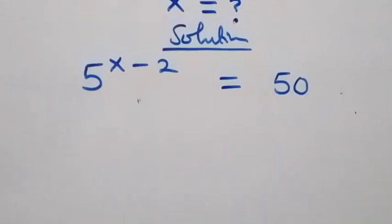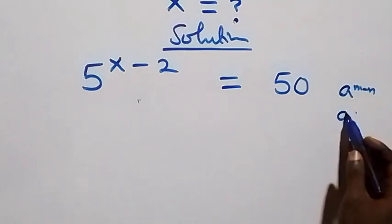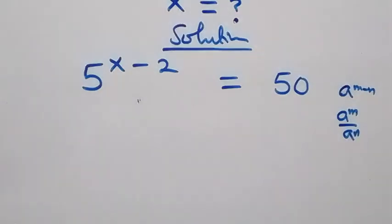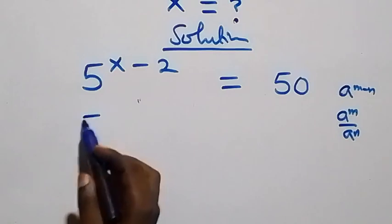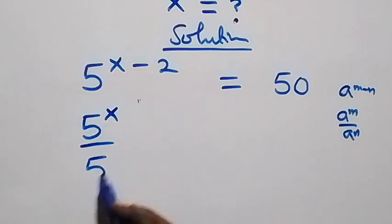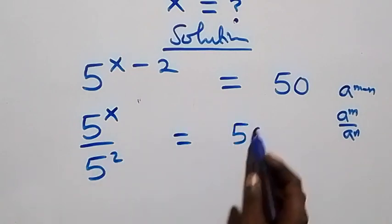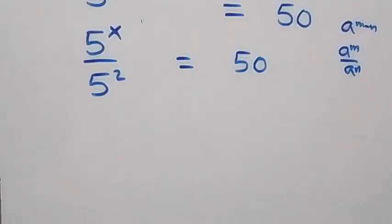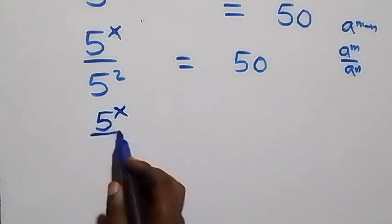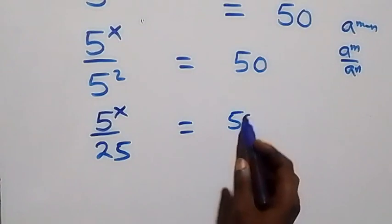This follows from when we have a raised to power m minus n, which is the same thing as a raised to power m over a raised to power n. That is, we can write this as 5 raised to power x over 5 squared, then equals to 50. This becomes 5 raised to power x over 25 equals to 50.